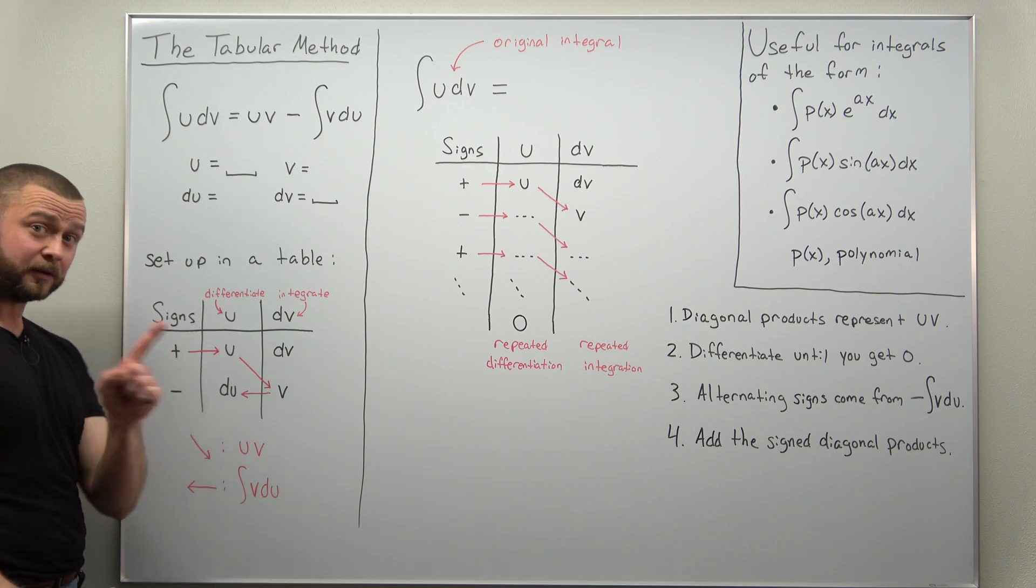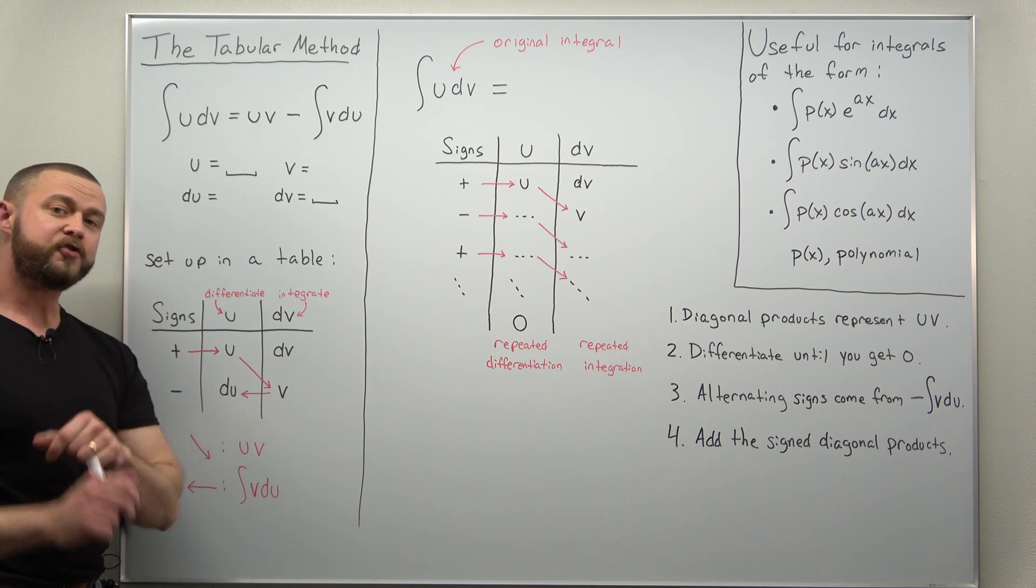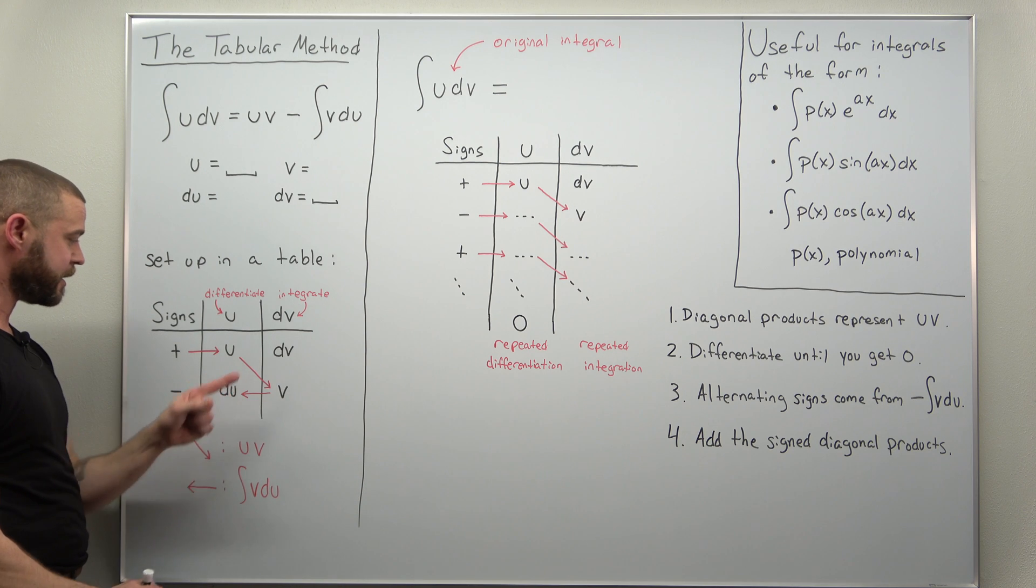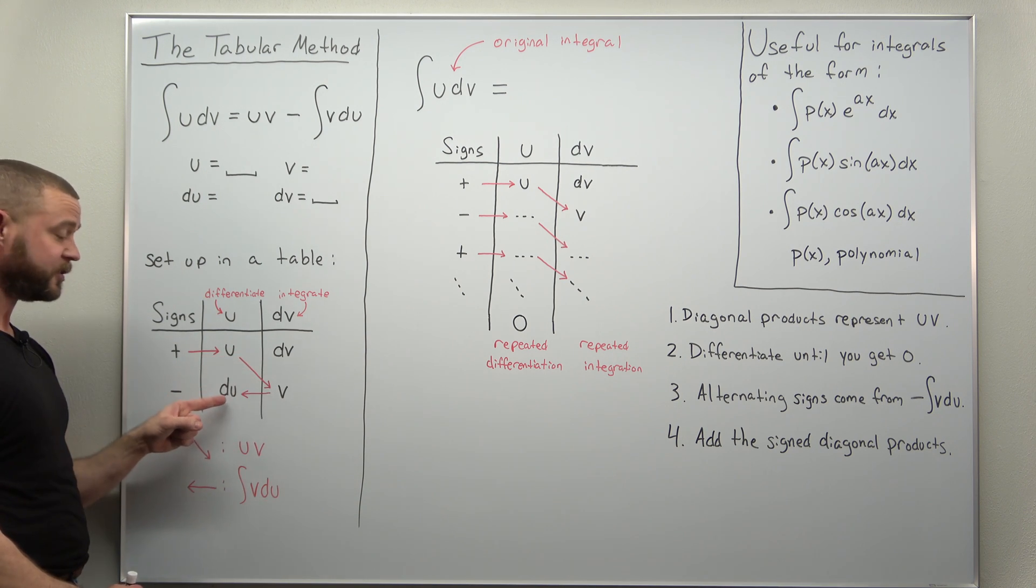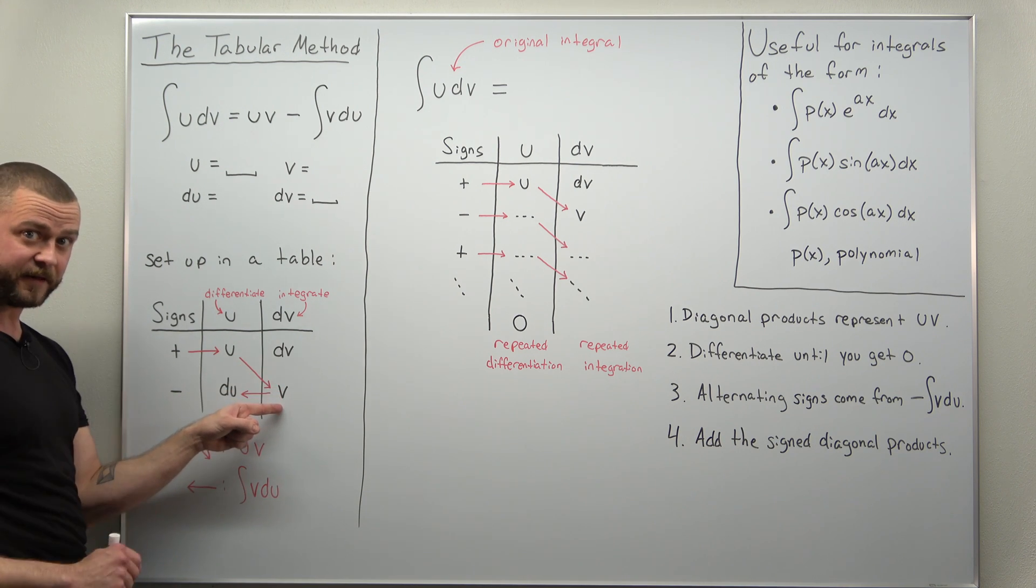The middle column is your u, or choice for u, and the last column is your choice for dv. If we fill that in, this is u, that's dv. Remember you differentiate to get du, but dv you integrate to get v.